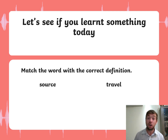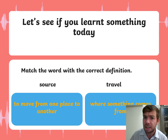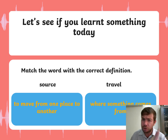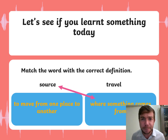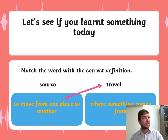Let's see if you learned something today. We have two words: source and travel. Can you match each to the correct definition? The two definitions are: 'to move from one place to another' and 'where something comes from.' So which one is source? Did you say 'where something comes from'? You are 100% correct! That means travel means 'to move from one place to another.' Well done!